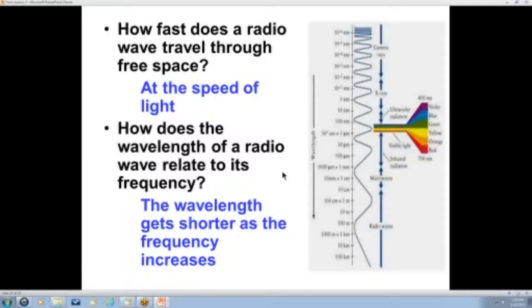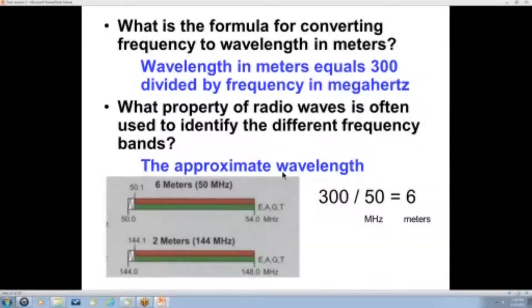What's the formula for converting frequency to wavelength in meters? The wavelength in meters equals 300 divided by the frequency in megahertz. I put that down here for you. 300 divided by the frequency in megahertz.